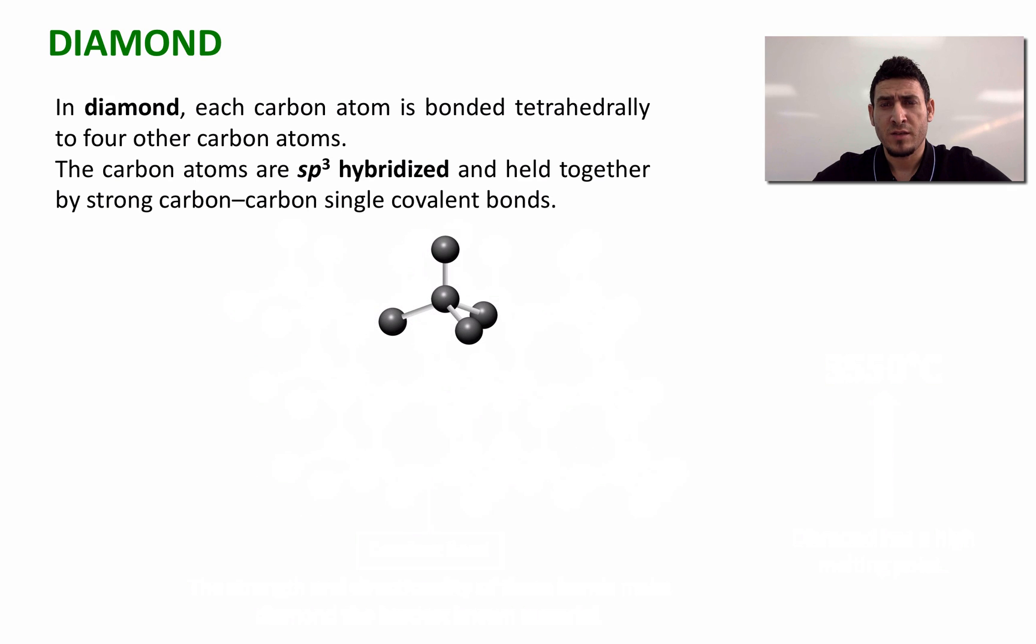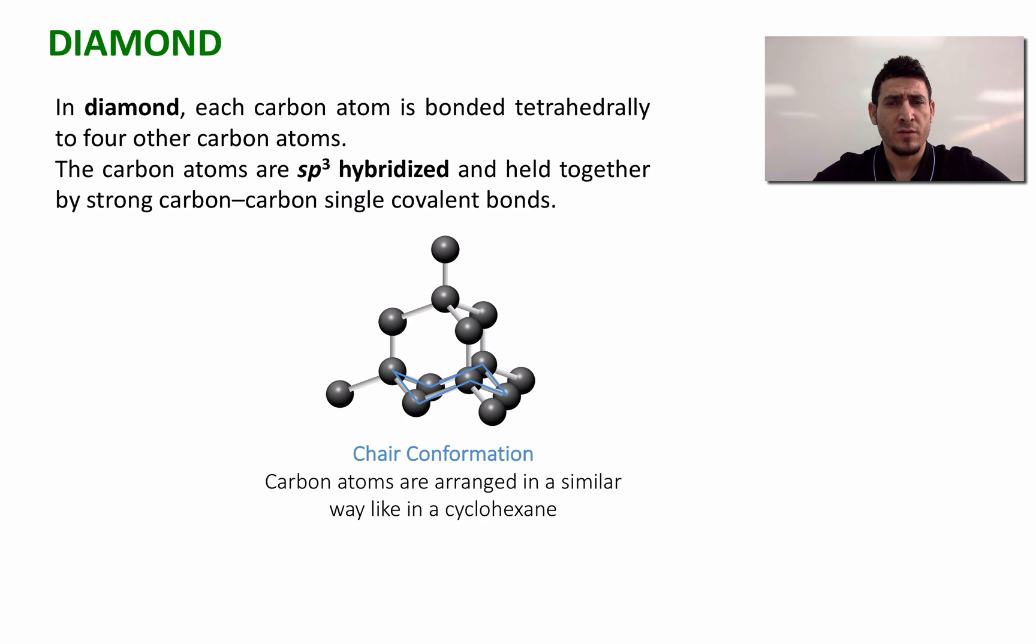If we zoom into the inside of the structure of diamond, we can see that every six carbon atoms are arranged in a chair conformation in a similar way to that of cyclohexane. From the side, we can see that the opening looks like a hexagon, similar to how we represent cyclohexane in a 2D structure. This makes diamond a very structured crystal and hence its hardness.